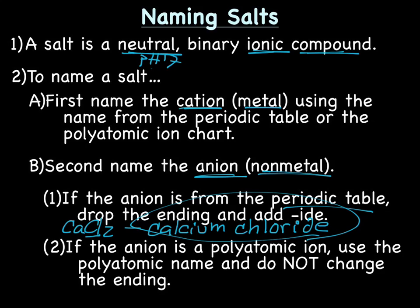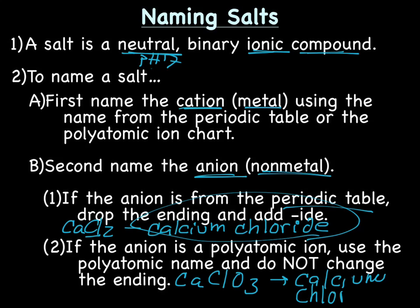If the anion is a polyatomic ion, use the polyatomic ion name and do not change the ending. For example, if I had CaClO3, that would be calcium chlorate. ClO3 is a polyatomic ion — chlorate. So the name of this compound is calcium chlorate. That's how you name salts, something you already know how to do.